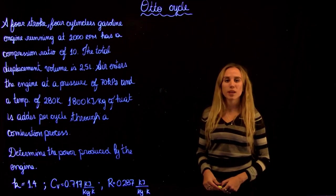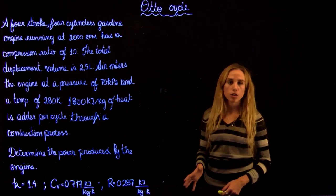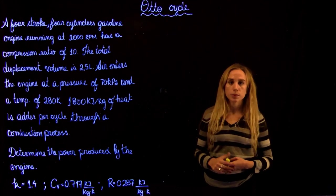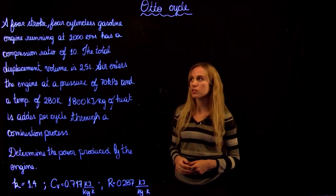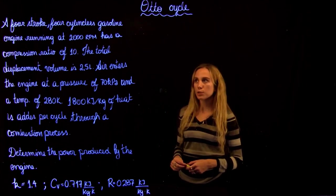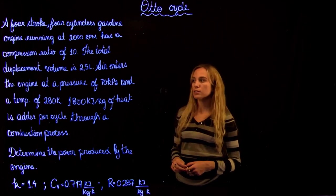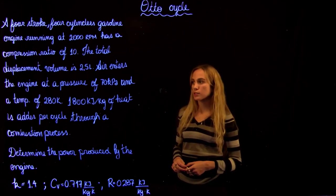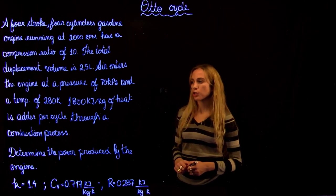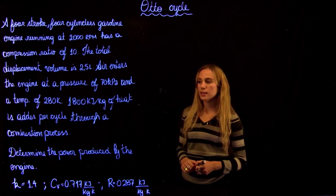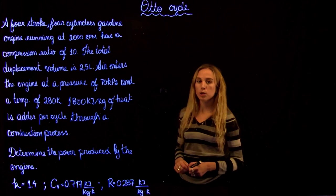Hello and welcome to Thermodynamics 2 tutorials with Maria. We're going to be solving an Otto cycle, which is the typical spark engine process. We are told that a four-stroke, four-cylinder gasoline engine running at 2,000 RPM has a compression ratio of 10. The displacement volume is 2.5 liters. The air enters the engine at a pressure of 70 kilopascals and a temperature of 280 kelvins. 1,800 kJ per kilogram of heat is added per cycle through a combustion process.